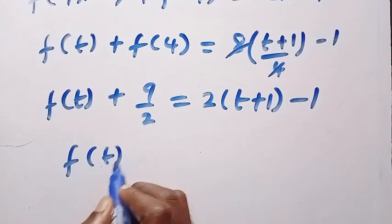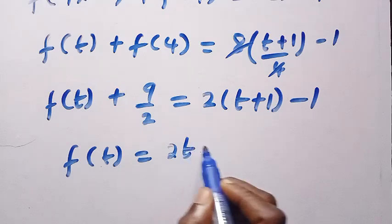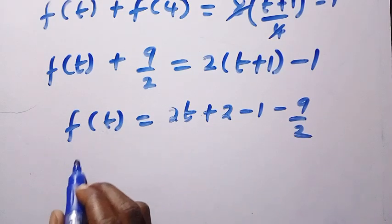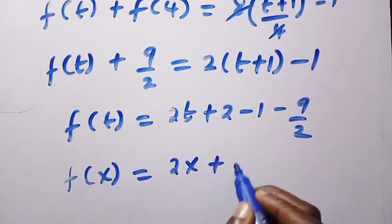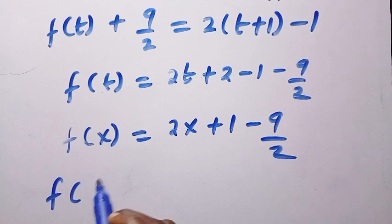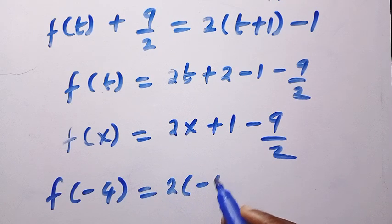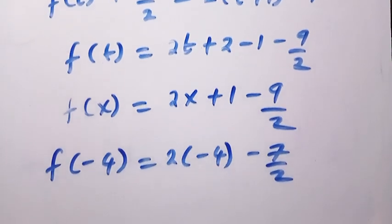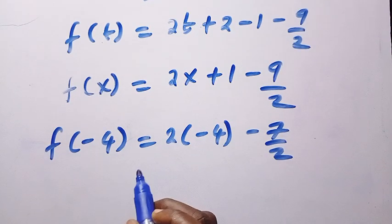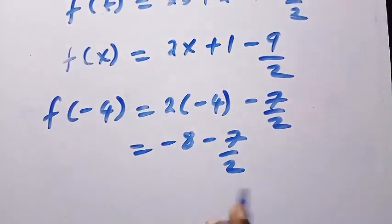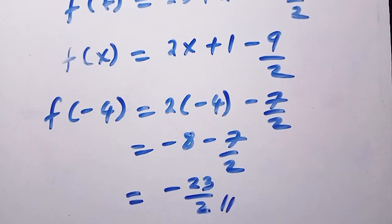Then we have f of t equals 2t plus 2 minus 1 minus 9 divided by 2. Renaming t back to x, we get f of x equals 2x plus 1 minus 9 over 2. Now replacing x with minus 4, we have f of minus 4 equals 2 times minus 4 plus 1 minus 9 over 2, which gives minus 8 plus 1 minus 9 over 2, simplifying to minus 7 minus 9 over 2, and the answer becomes minus 23 divided by 2. That is the same answer, just a different approach.